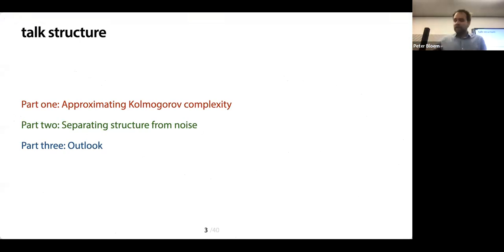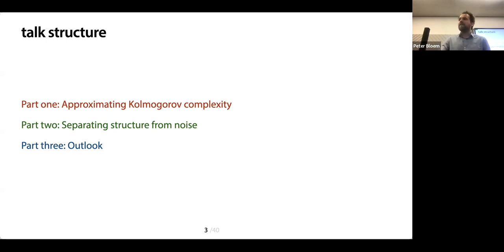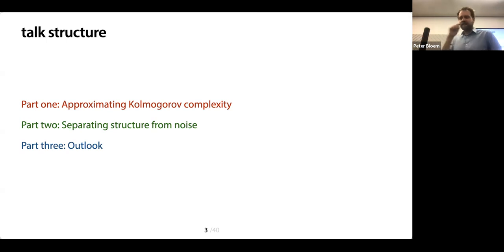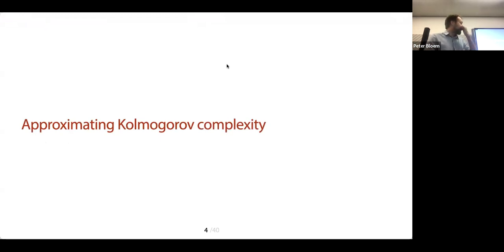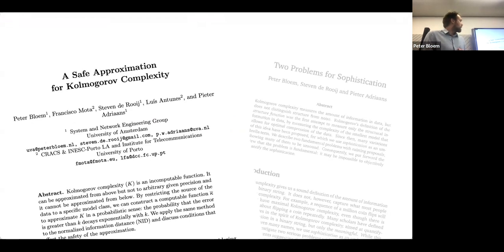I'd like to indulge in the final few minutes of my talk — I'll talk a little bit about what's happened since. These papers are from 2014 to 2015, and a lot of stuff has happened in machine learning and AI since then. I think we can go back to this, and there's some interesting stuff to do now, which I'll finish up with.